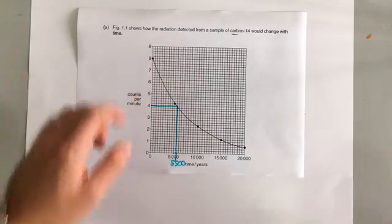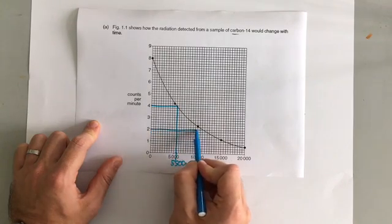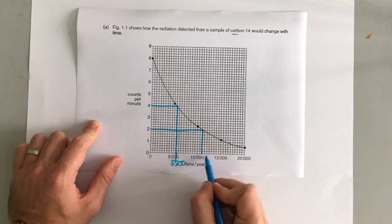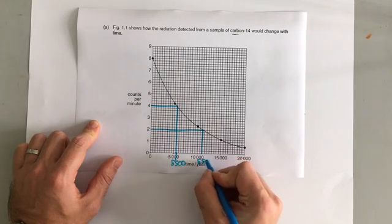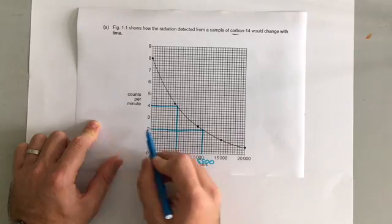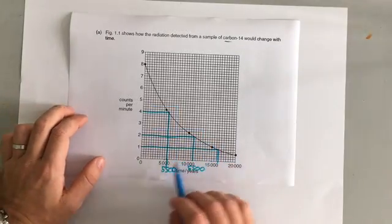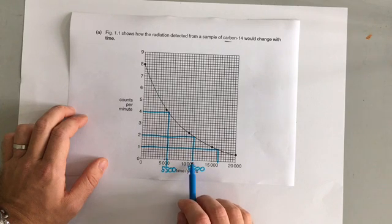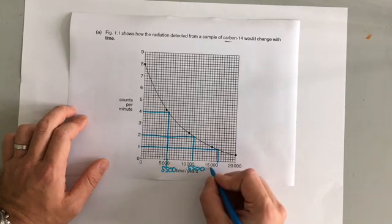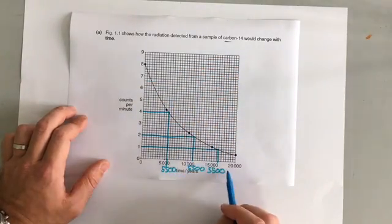You don't have to use eight and four. You could also do four to two, and if we go along from two, and then down from here, we can see that it's taken another 5,500 years to halve, from 5,500 to 11,000. And then if we go from two to one, it's gone from 11,000 to about 16,500, which is another 5,500 years.